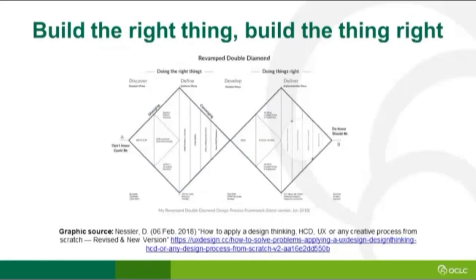Personas help us make sure we build the right thing and we build the thing right. What you're seeing here is the double diamond of design. The first stage is making sure we're building the right thing, then we go through and ask did we do it right? The persona - that user group we're building for - remains constant throughout. There are going to be good times when we're hitting it and low times when we're not, and the persona keeps us focused on who we're building for and why we're building it.